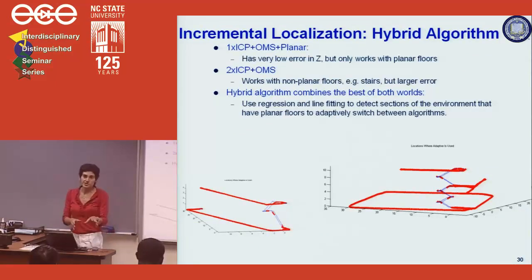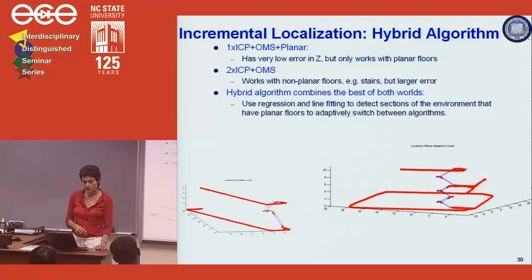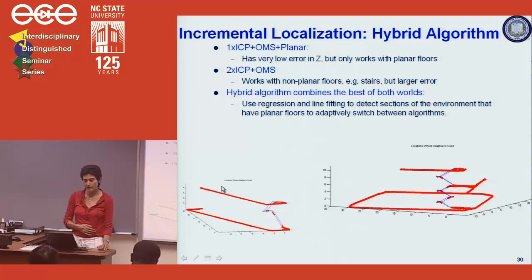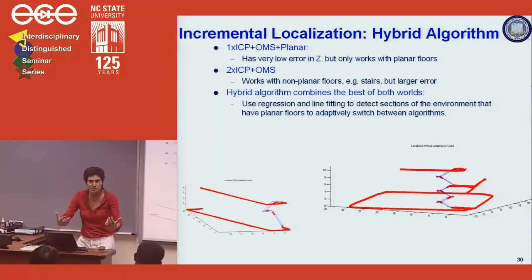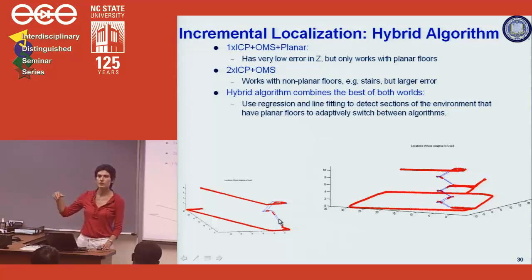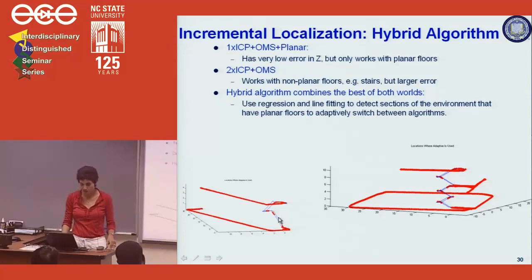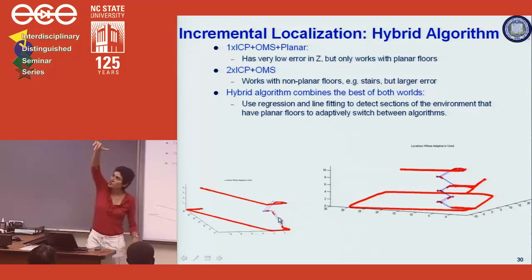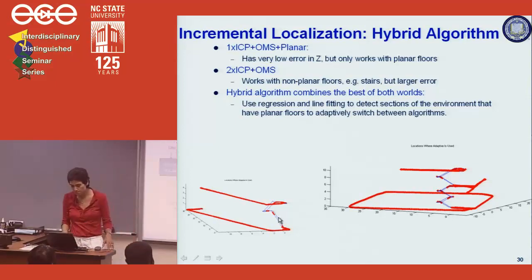These algorithms can be mixed and matched. In a three-dimensional path of Cory Hall's fourth and third floors, we're on a plane, then on staircases, then on a plane again. The hybrid algorithm detects planar regions and switches to the one times ICP planar algorithm, and switches to two times ICP plus OMS on non-planar regions like staircases. It now detects even the small planar landing areas between staircase sets.